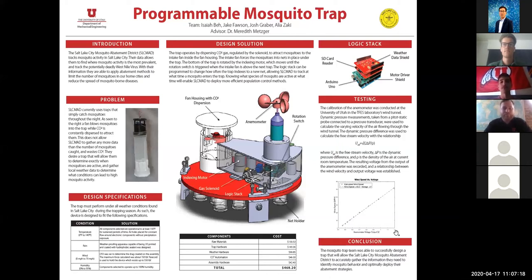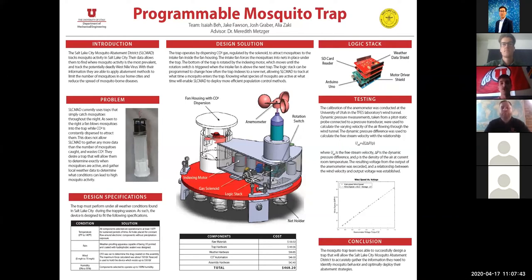On the user end, they will take a micro SD card and use a TXT file to input the time slots they are interested in. When the trapping period is done, the system will have automatically generated a CSV file that gives them weather data along with timestamps, so they can determine when mosquitoes were most active and what conditions were present at those times.